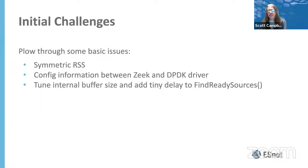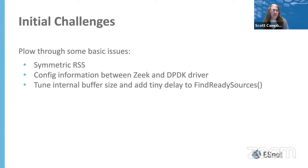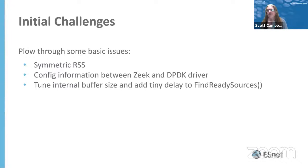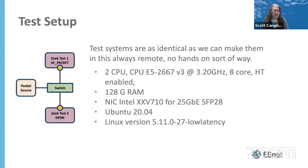Some basic things we had to plow through: RSS (Receive Side Scaling) is a continuing irritant in the community — I don't know why it has to be as hard as it is, but it is. That took a bit of time. Figuring out how to effectively communicate configuration information between Zeek and the DPDK driver took a couple of days but ultimately wasn't a real big problem. And we bumped into a few strange things — I call out 'find_ready_sources' because it was a source of tremendous hilarity during development.